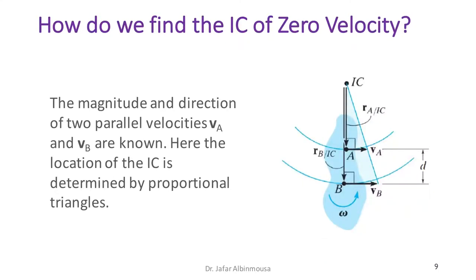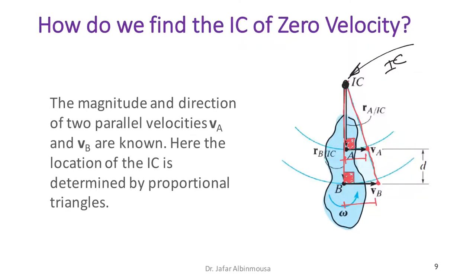In the fourth method, two velocities are parallel and acting in the same direction but with different magnitudes. We again construct one line perpendicular to both, and connect the arrowheads with another line. Their intersection gives the IC. Notably, in this case the IC may not even lie on the rigid body itself, which is totally fine.